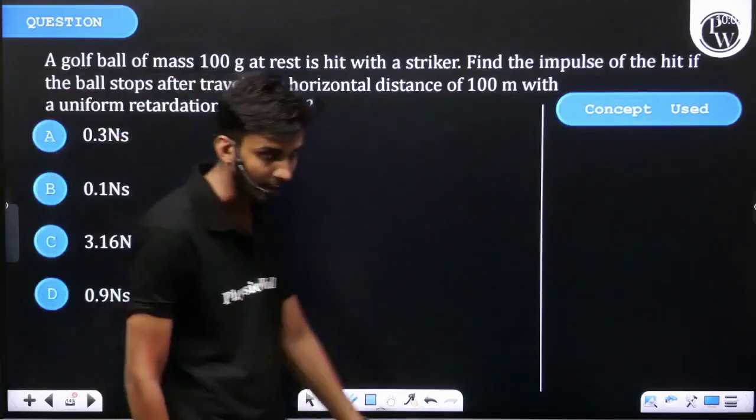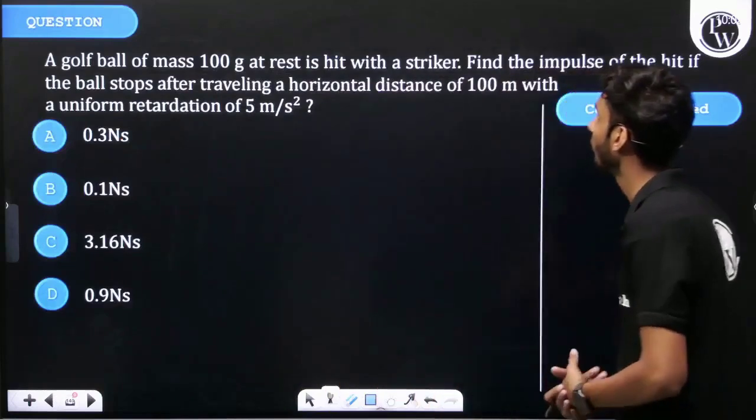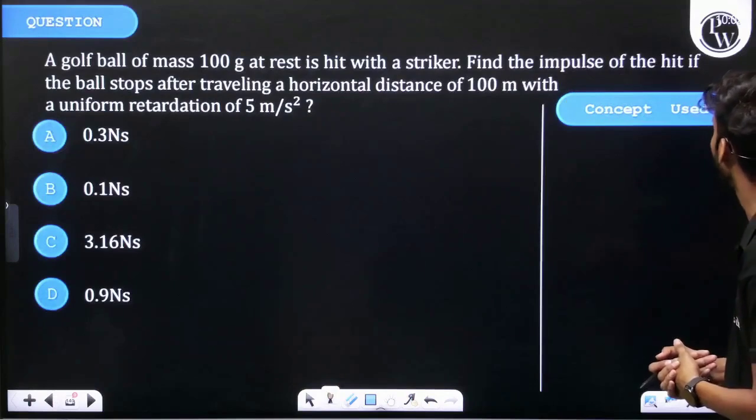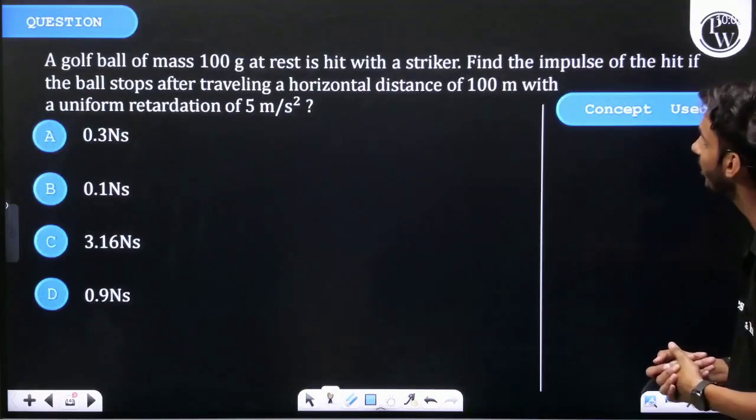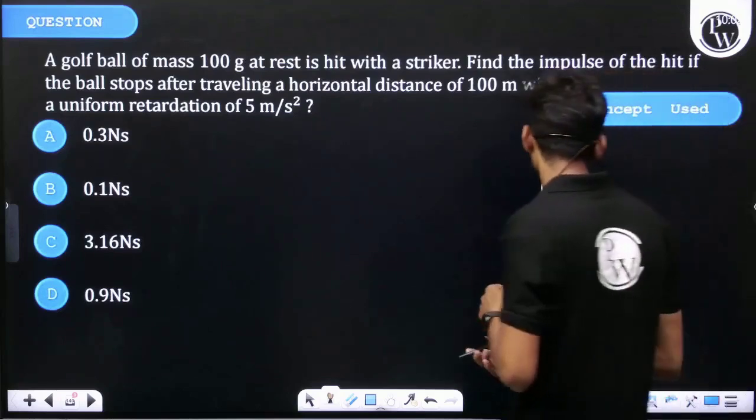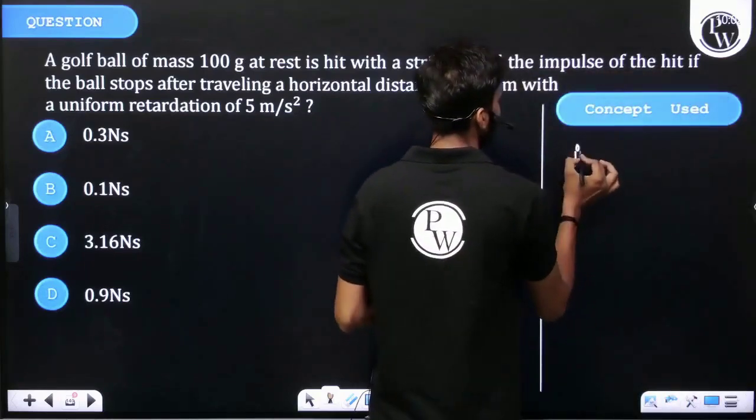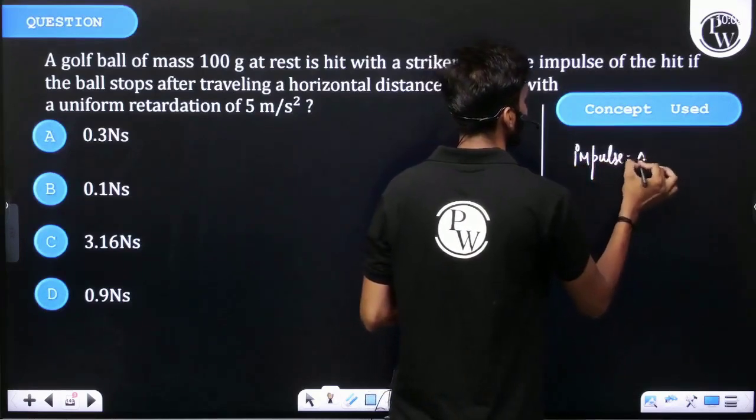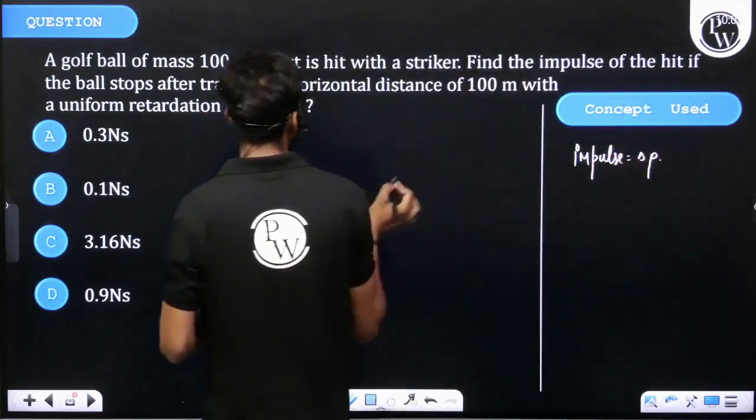Okay, let's see the question. A golf ball of mass 100 grams at rest is hit with a striker. Find the impulse of the hit if the ball stops after traveling a distance of 100 meters with a uniform retardation of 5 m/s². Impulse is equal to change in momentum.